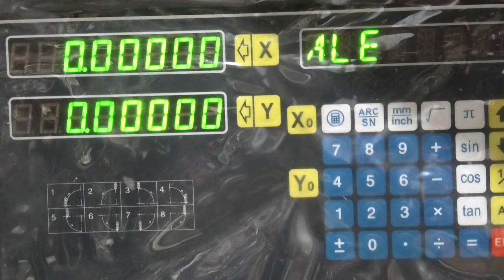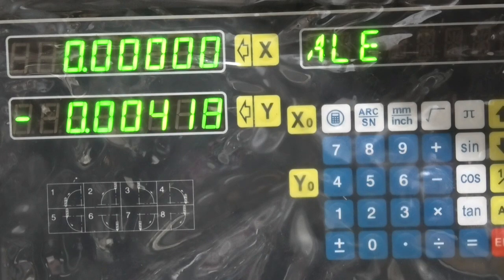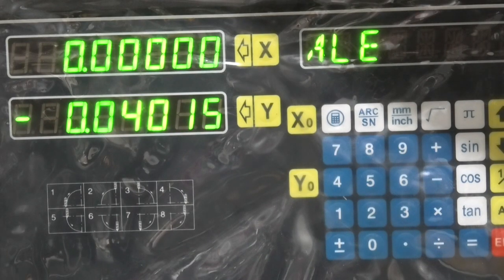This is my readout. I've zeroed it. Now if I move the slide in you can see on there it's showing me 40 thou movement. That's double what I had on my dial indicator. And the reason for that is I've got my cross slide reading doubled because if you take a thou cut or a 10 thou cut, you're actually taking 20 thou off diameter.